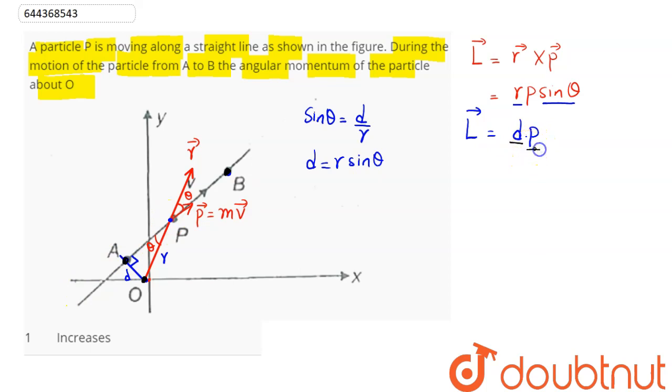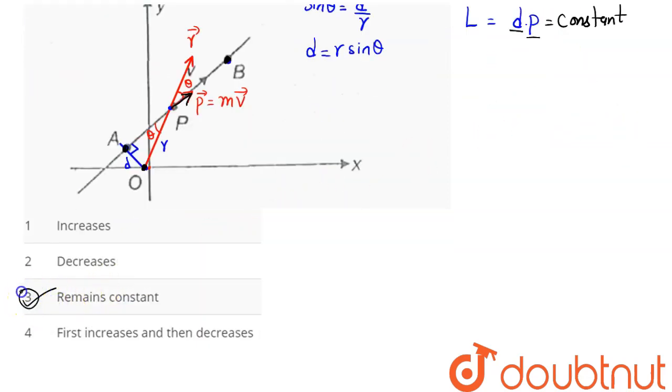The angular momentum of this particle about point O will remain constant. Therefore, angular momentum L vector is constant since D and P are both constant. Hence, option number 3, remains constant, is our answer.